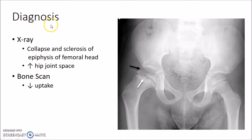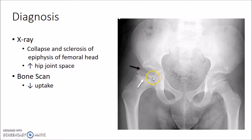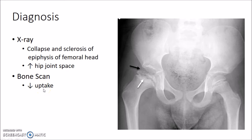How do you diagnose a case of Perthes disease? X-ray reveals collapse and sclerosis of the epiphysis of the femoral head, as you can see in this picture. The hip joint space will also be increased in Perthes disease. Bone scan reveals decreased uptake by the head of femur.